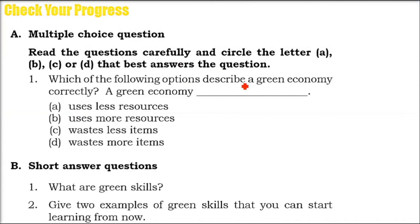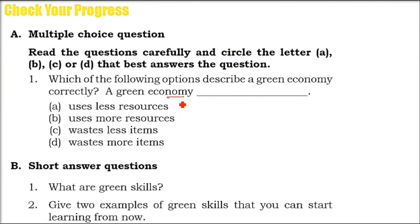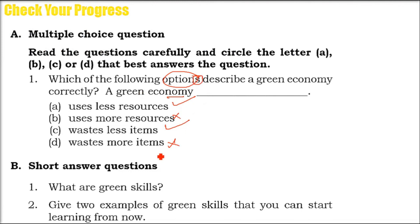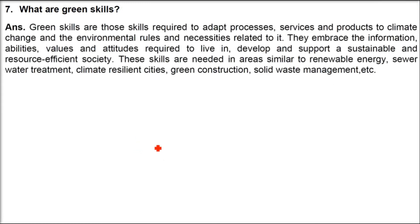Question and answer. Which of the following options describes a green economy correctly? A green economy uses less resources — absolutely true. Uses more resources — wrong. Wastes less items — true. Wastes more items — wrong. Since multiple options are allowed, the answer is A and C together.